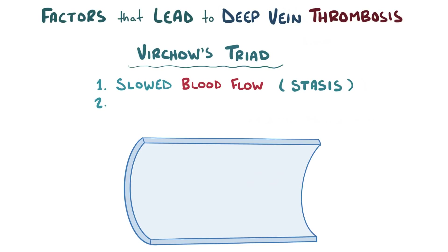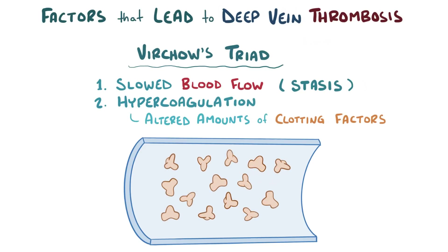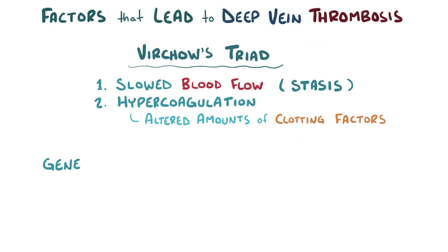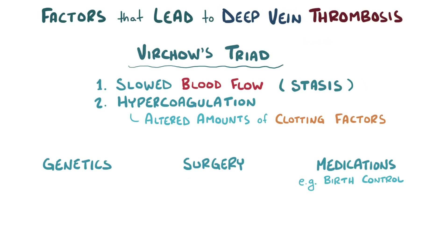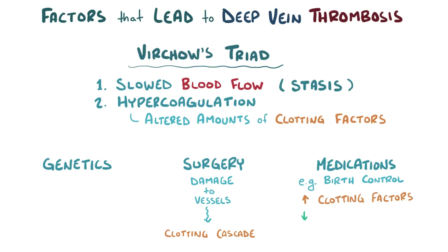The second factor is a state of hypercoagulation, where altered amounts of clotting factors increase primary or secondary hemostasis. This can happen for genetic or acquired reasons, like surgery or taking certain medications like birth control pills. During surgery, physical damage to the vessels activates the clotting cascade. Birth control pills tip the balance towards clotting because they increase the levels of clotting factors and decrease the levels of some of the anticoagulation factors, like protein C and antithrombin.